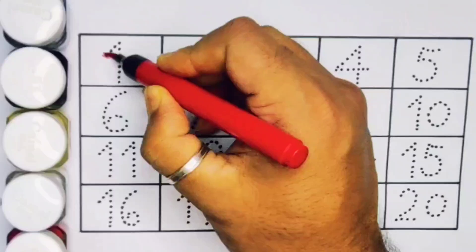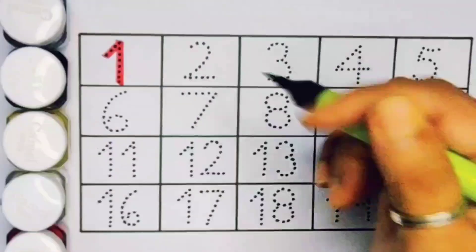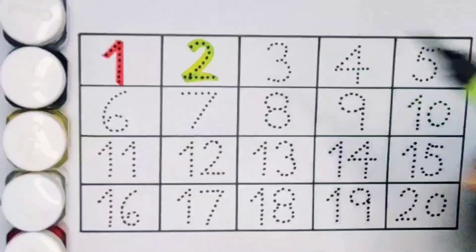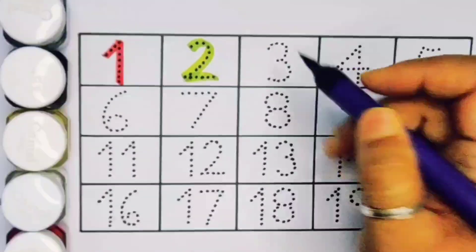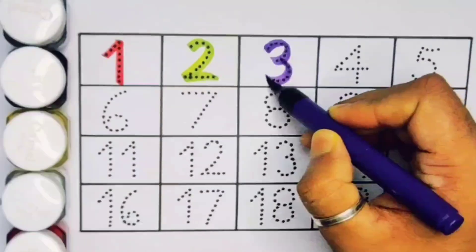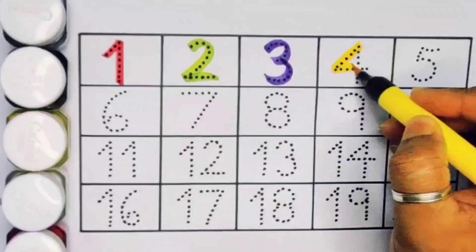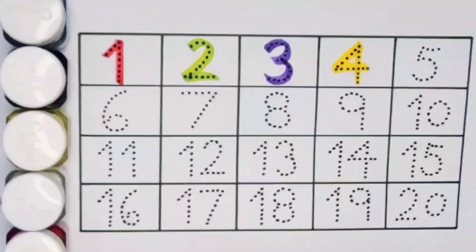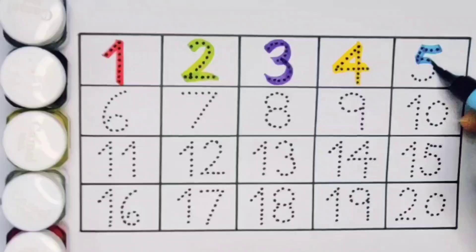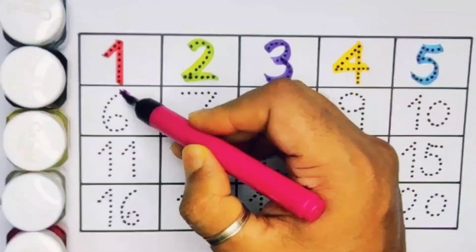First 1, number 1. Next kids 2, number 2. Next kids 3, number 3. Next 4, number 4. Next kids 5, number 5. Next 6, number 6.